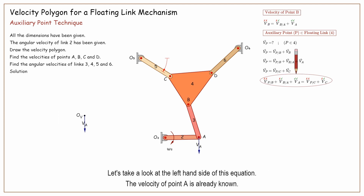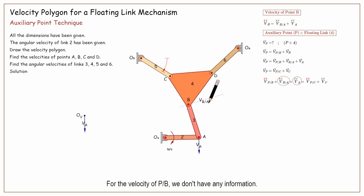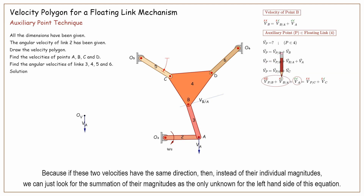Let's take a look at the left-hand side of this equation. The velocity of point A is already known. The velocity of B with respect to A is perpendicular to the line connecting B to A. For the velocity of P with respect to B, we don't have any information. In order to reduce the number of unknowns, we want to combine these two velocities into one. This means that we want the direction of the velocity of P with respect to B to be parallel to that of the velocity of B with respect to A. Because if these two velocities have the same direction, then instead of their individual magnitudes, we can just look for the summation of their magnitudes as the only unknown for the left-hand side of this equation.